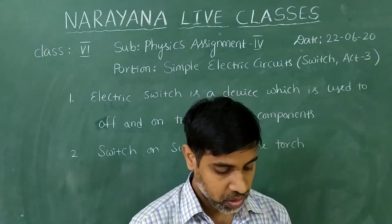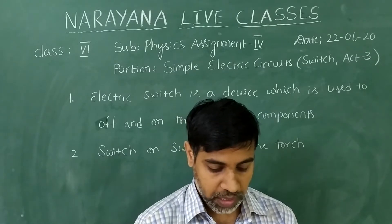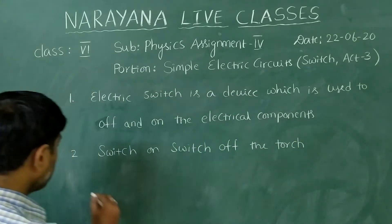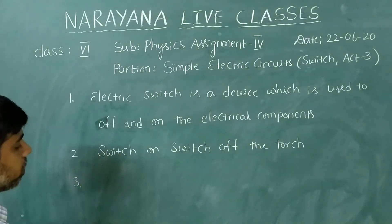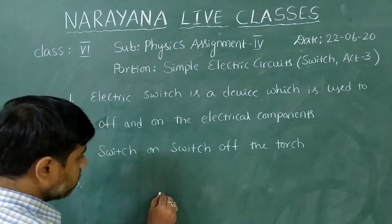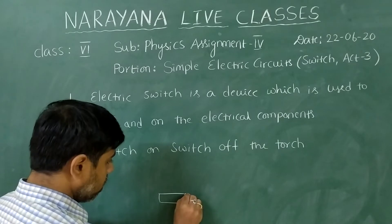The third question is, draw a circuit diagram consisting of a cell, bulb, connecting wires and a switch. So the circuit diagram, we need to draw all these components. First of all cell, see, this is the cell, what we have.